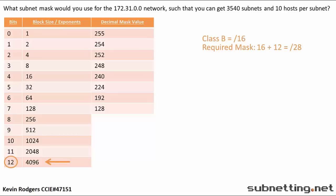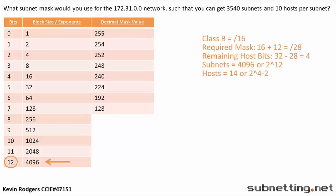To confirm we have enough host bits, we take the total bits, which is 32, and subtract our 28 network bits, which leaves us with 4 host bits. So with our slash 28, we will have 4,096 subnets with 14 hosts per subnet.